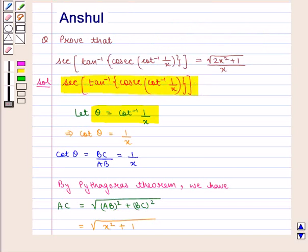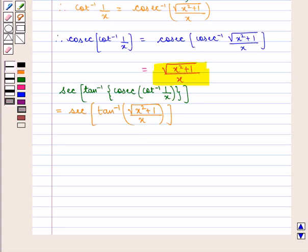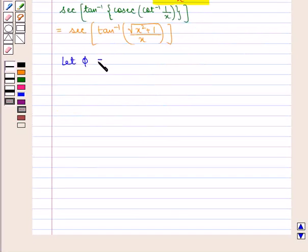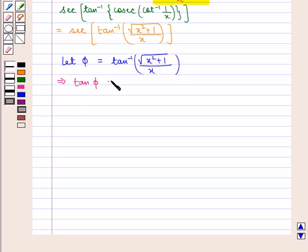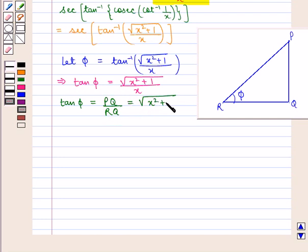Now, putting the value of cosec of cot inverse of 1 by x as square root of x squared plus 1 by x in the given expression, we get sec of tan inverse of square root of x squared plus 1 by x. Now let phi be equal to tan inverse of square root of x squared plus 1 by x, which implies that tan of phi is equal to square root of x squared plus 1 by x. In a triangle PQR, if phi is the angle between the lines PR and RQ, then tan of angle phi is given by perpendicular upon base, i.e., PQ upon RQ, which equals square root of x squared plus 1 by x.